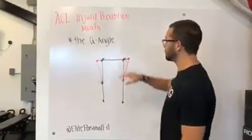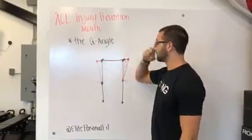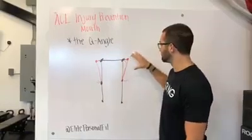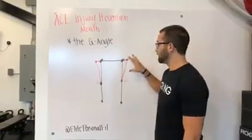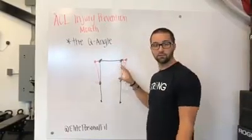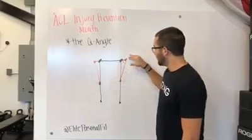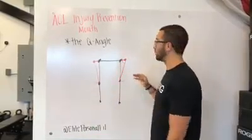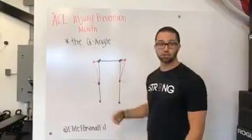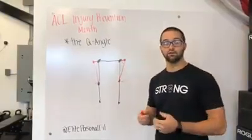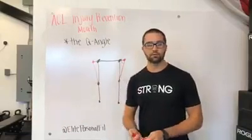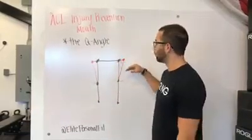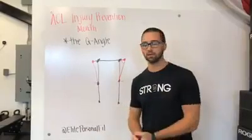So the Q angle is one of the things — I would say there's probably two things that females have as a disadvantage. One is the Q angle, which every hip is going to be different, but a bigger angle does increase the chances, especially the wider the hip. And then strength is going to be the other one. Strength we're going to talk about in a ton of different videos after today, but I wanted to explain the Q angle and why it typically happens more in females.